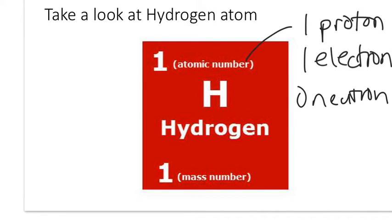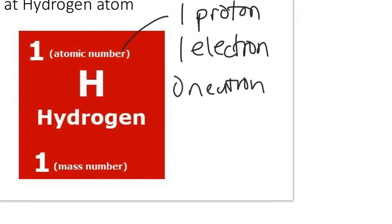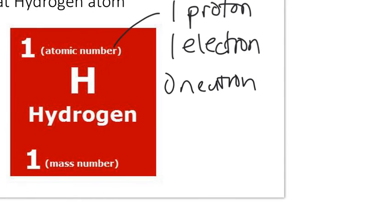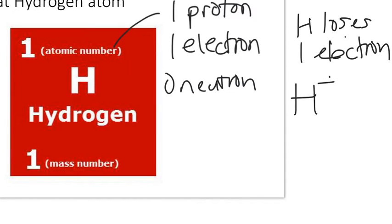You might wonder, what does this have to do with proton? Now, take a look. This is your hydrogen atom: one proton, one electron, no neutron. What happens when the hydrogen loses that one electron to form your hydrogen ion?